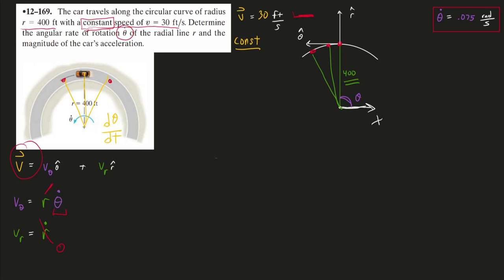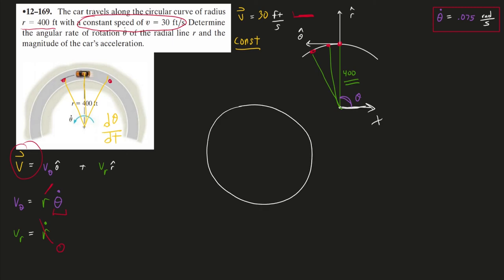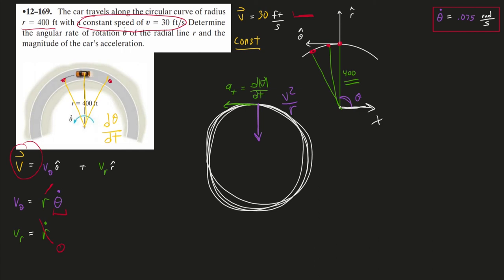Now we move on to acceleration. You might think acceleration is zero because we have constant speed. But from normal-tangential component analysis, even with constant speed on a circular path, we still have that centripetal component of acceleration. It's the tangential component that is zero — that comes from a change in speed. So we could calculate acceleration as v squared over r, but we'll go through the transverse-radial approach to see how that plays out.